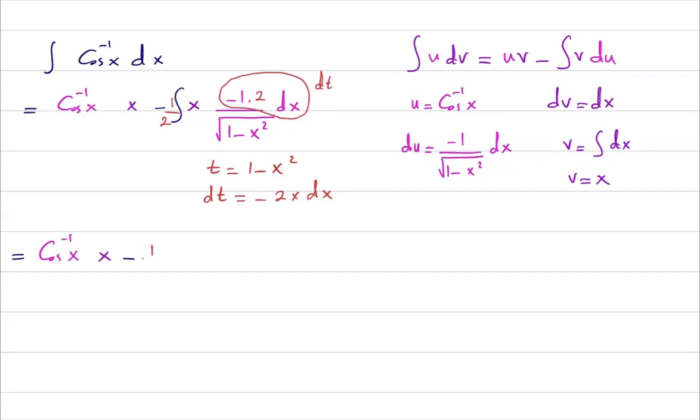And then I'm going to use this part as my dt. So I end up with negative a half integral of dt divided by square root of t.